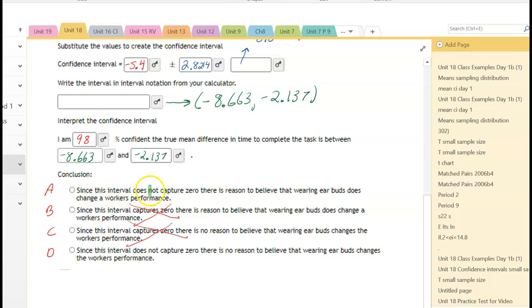Part A, since the interval does not capture zero, there is reason to believe that wearing earbuds changes a worker's performance. If you look at Part D, since this interval does not capture zero, which is true, there is no reason to believe. Well, since it misses zero, there is a reason. So the correct answer here is letter A.